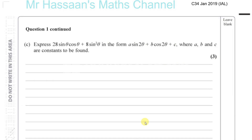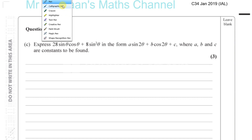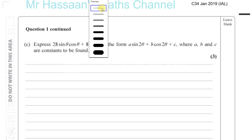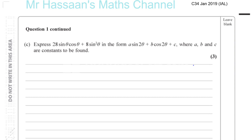Question 1 part C from C34 January 2019 IAL. This question is again about trigonometry identities. We've got to express 28 sin theta cos theta plus 8 sin squared theta in the form a sin 2 theta plus b cos 2 theta plus c.